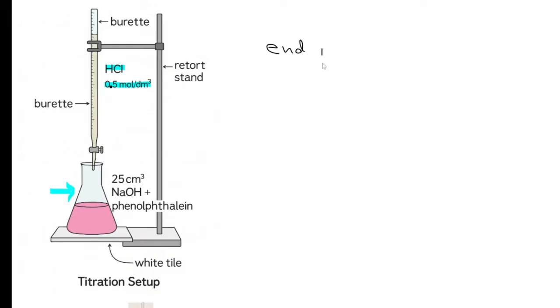End point is where the reaction ends, when all of the sodium hydroxide reacts with hydrochloric acid to turn into sodium chloride and water. We need to find the exact volume of hydrochloric acid used for this. Here you can see the balanced chemical equation: sodium hydroxide combines with hydrochloric acid making sodium chloride and water.